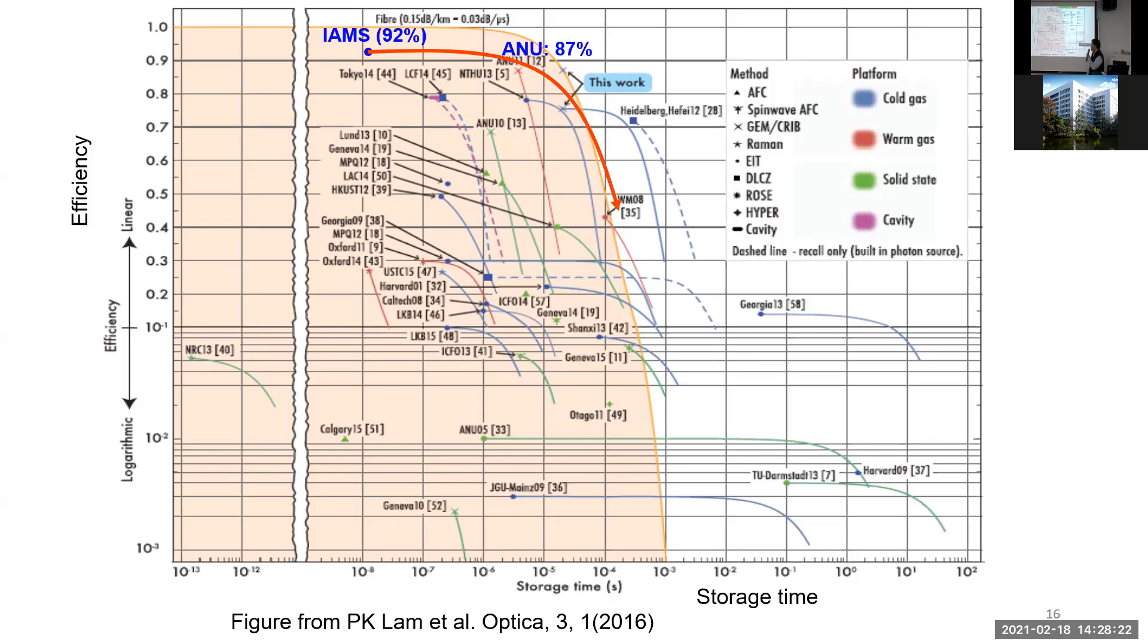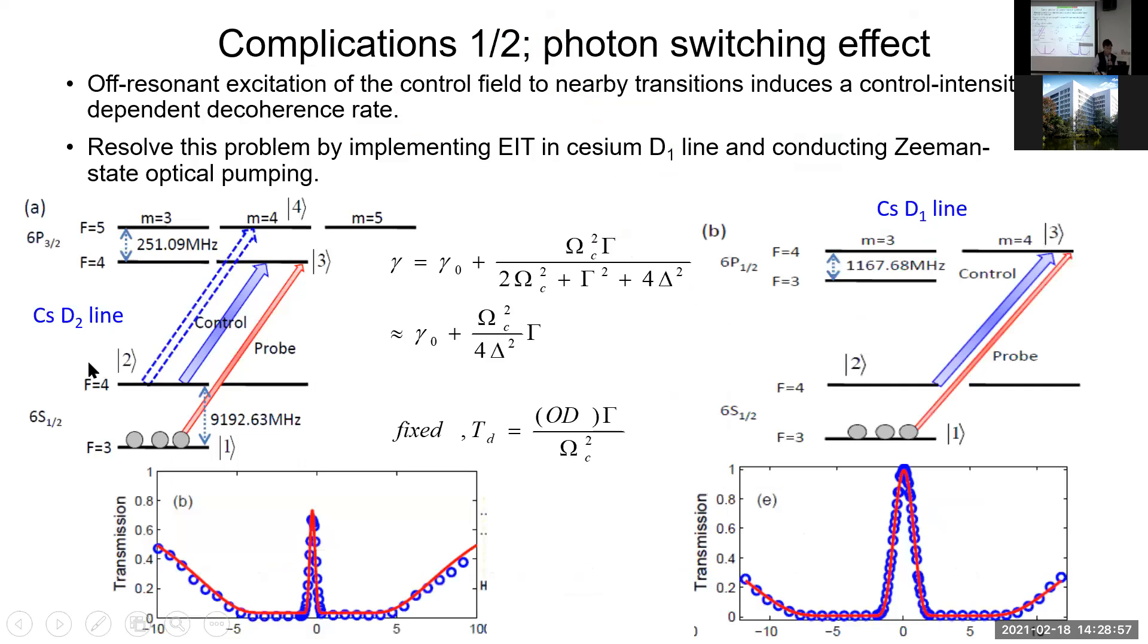Here shows the efficiency versus the storage time. As you can see, Professor Yu, they got 78, which is I think this point around 213. And the Australia group, Professor Ping Koy Lam, they got 87%. Our storage time is not very long, but it's the highest efficiency.